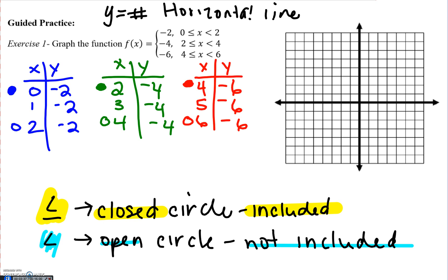So let's go to actually graphing it. Starting with the first piece of negative 2, I'm going to go down to y equals negative 2 and starting at 0, negative 2, I'll put a closed circle on (0, -2) and an open circle at (2, -2), then connect them with a straight line. There's no need to plot the point (1, -2), but if you prefer, you can.